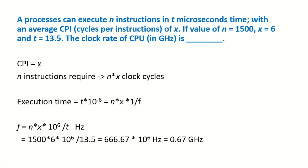A processor can execute N instructions in T microseconds time with an average CPI, which is cycles per instruction, of X. N is 1500, X is 6, and T is 13.5. So what will be the clock rate of the CPU in Gigahertz?